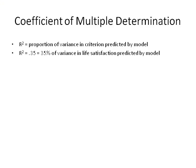In bivariate regression, we use the coefficient of determination, or r-squared, to indicate the proportion of variance in the criterion predicted by the predictor. In multiple regression, we use big R-squared, or the coefficient of multiple determination, to answer the same question.